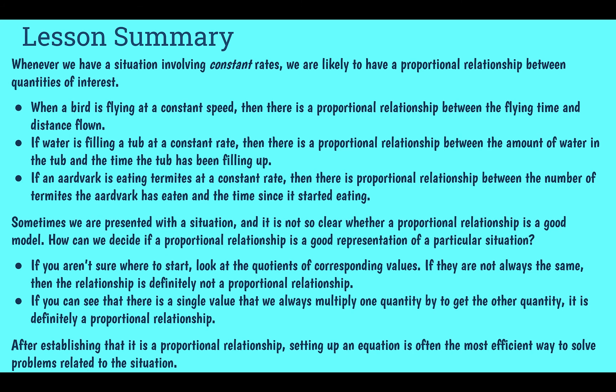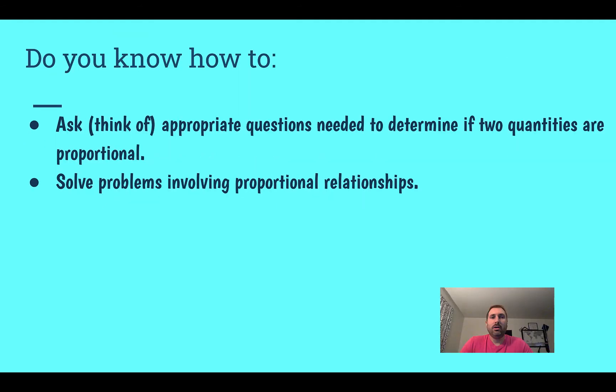If you're not sure whether something represents a proportional situation, try writing an equation for it or making a table. If those don't work, it's probably not proportional. Setting up an equation is your best bet — just like we set up equations for the number of touches per minute in the juggling example. It helped us solidify our reasoning that the situation was a proportional relationship.